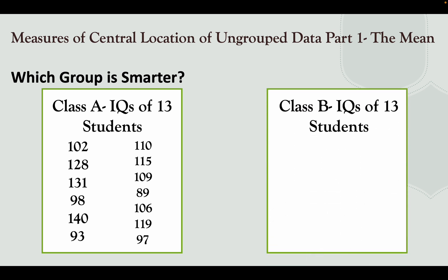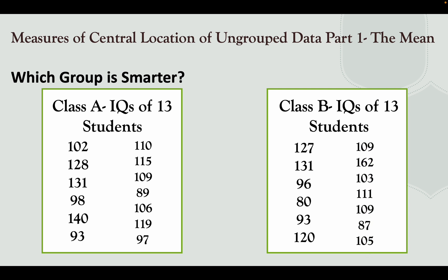And in Class B, the IQ scores of 13 students are: 127, 131, 96, 80, 93, 120, 109, 162, 103, 111, 109, 87, 105. We usually look at the lowest score and the highest score of the group to identify which group is smarter. In Class A, the lowest score is 89, while in Class B we have 80.